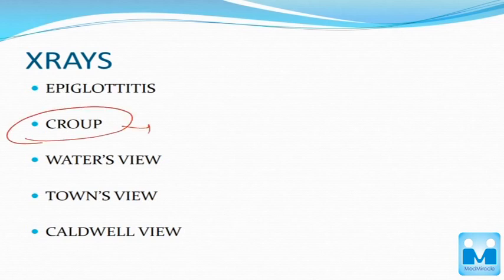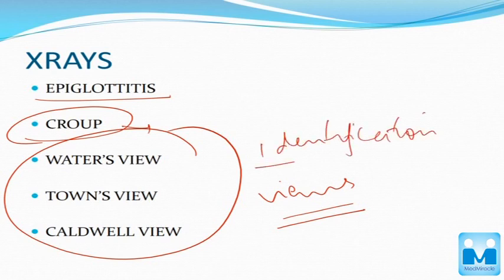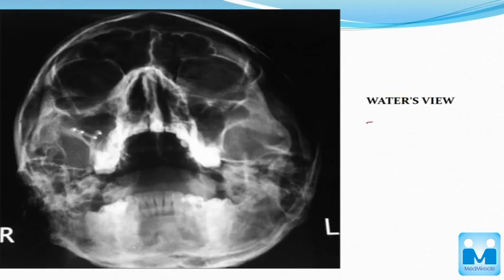Coming to the x-ray part — I have already shown you the x-ray of croup with the steeple sign, and epiglottitis with the thumb sign. There are a few specific views used in ENT that you have to know — when each is used and what identification an x-ray may give, since they will be asked to identify the view shown. This is Water's view, used for the paranasal sinuses.